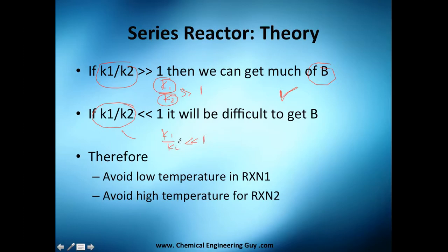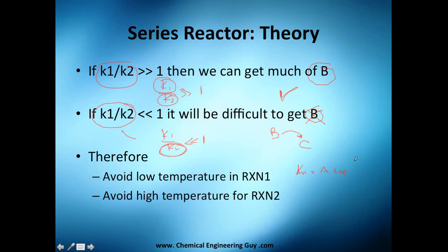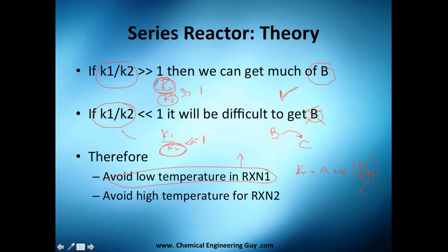A very low k1/k2 ratio means k2 is a huge number — you're not reacting to get B, you're reacting to get C, and B is reacting into C. So please avoid that. How do you change k1 and k2? Remember from the Arrhenius equation: the frequency factor, which we cannot change; the energy — we might use a catalyst, but we'll see that in the catalyst chapter; R is a constant; and the temperature, guys, you can actually change. So avoid low temperatures in reaction number 1 — try high temperatures if possible — and avoid high temperatures in reaction number 2, so k2 will be low and you increase your k1/k2 ratio.